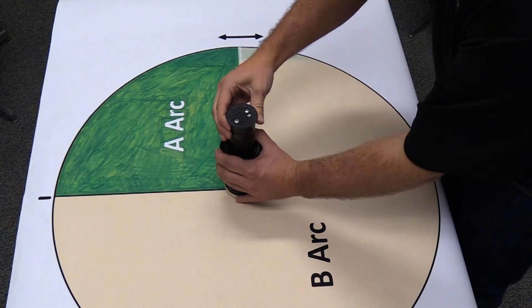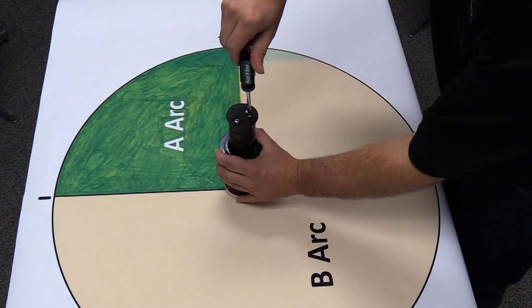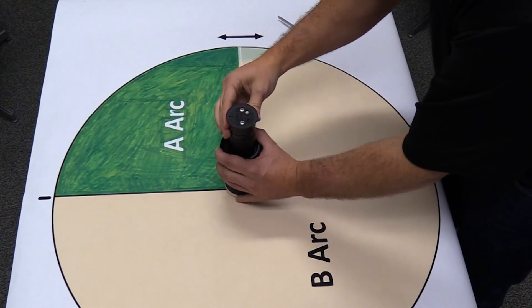We can quickly set it back to the A arc with a clockwise rotation of the arc adjustment stem. And now we're back inside these two stops of the A arc.